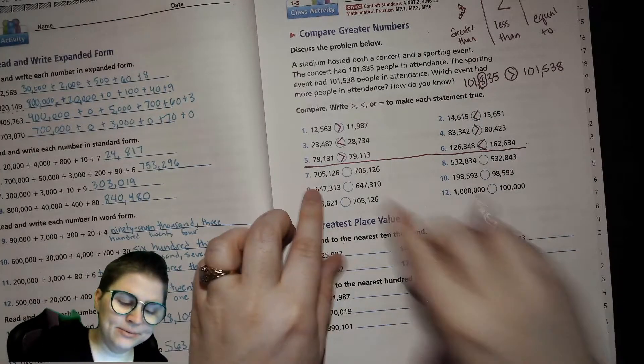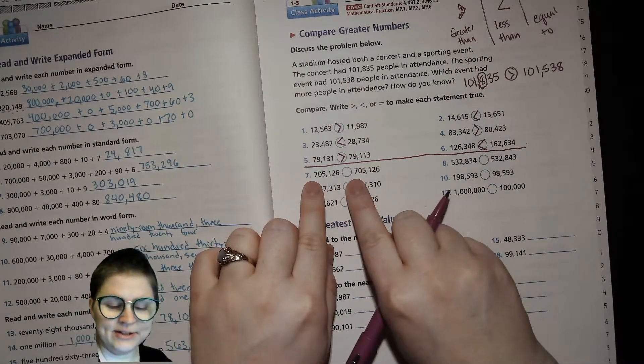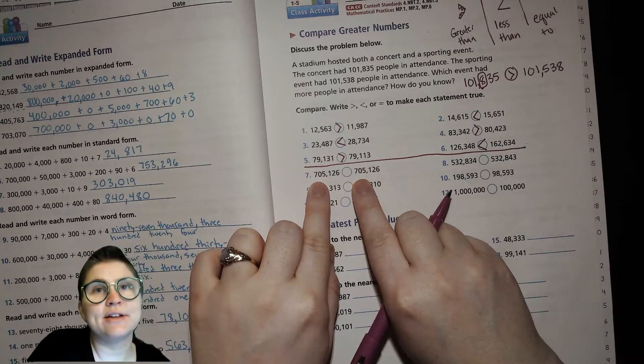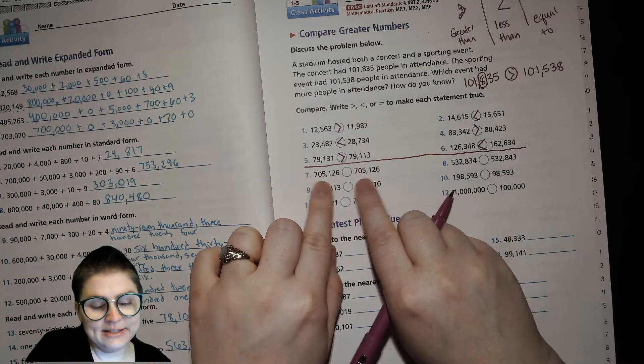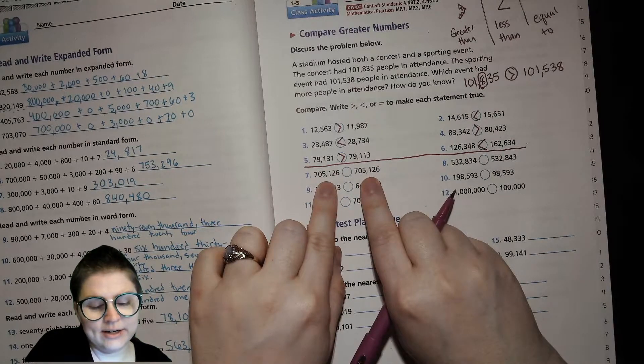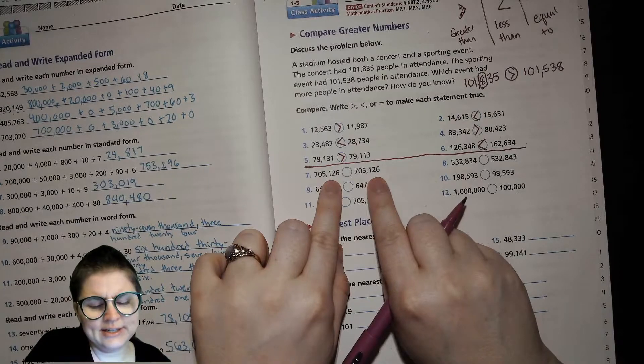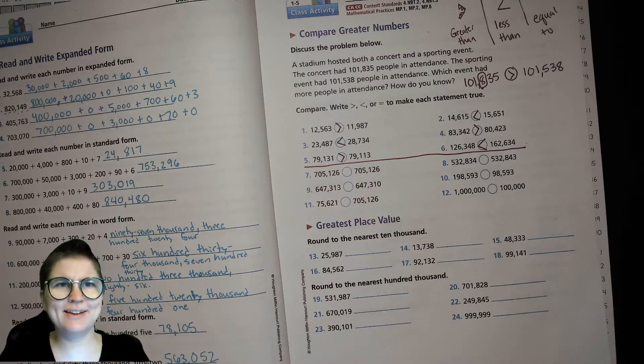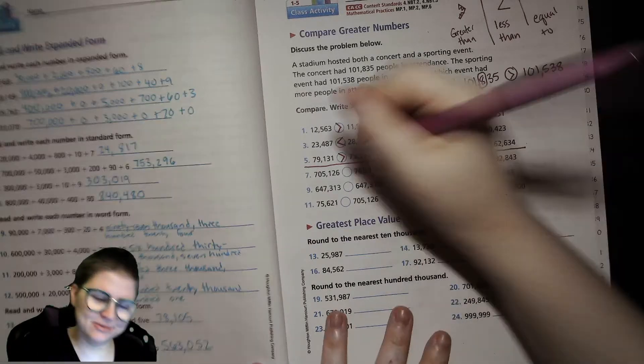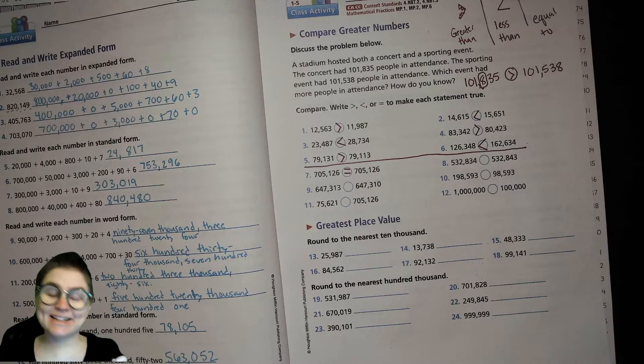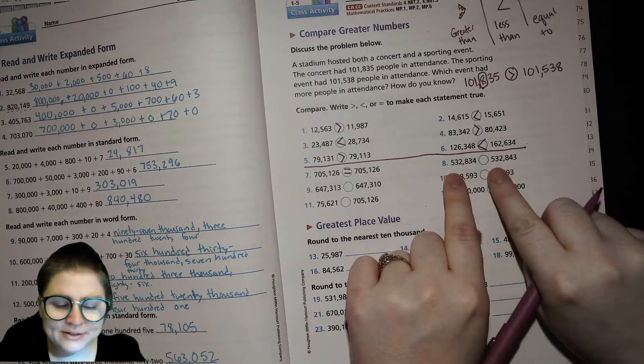Okay. Here we go. 700,000. Same. Nothing in the 10,000 place. Nothing. They're both 5,000. 1 in the 100s. 2 in the 10s. 6 in the 1s. Well, they're the same number. What do we do with that? They are equal, right? If they're exactly the same, they're equal. Nothing is greater than the other one.